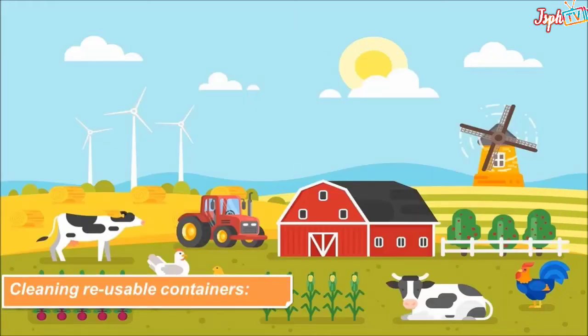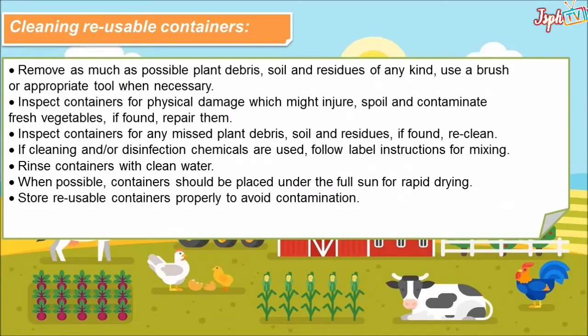For cleaning reusable containers: remove as much as possible plant debris, soil, and residues of any kind — use a brush or appropriate tool when necessary. Inspect containers for physical damage which might endure, spoil, and contaminate fresh vegetables; if found, repair them. Inspect containers for any remaining plant debris, soil, and residues; if found, reclean. If cleaning or disinfection chemicals are used, follow label instructions for mixing. Rinse containers with clean water. When possible, containers should be placed under full sun for rapid drying. Store reusable containers properly to avoid contamination.